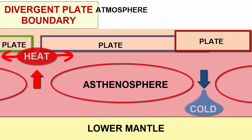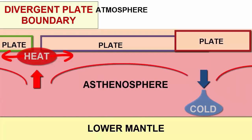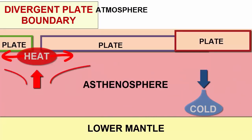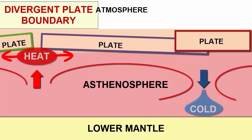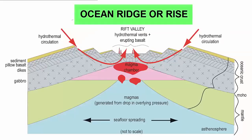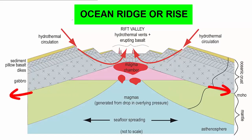The buildup of heat and material below pushes the plate upward and creates a linear mountain ridge. When these form along the ocean floor, we call them ocean ridges and rises. As the plates separate, a rift valley forms atop the ridge.